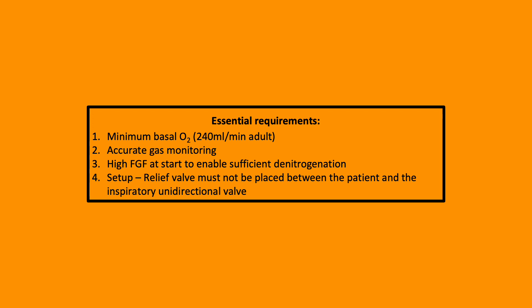You must at least match the basal oxygen requirement for the patient, which is classically 240 mls per minute in an adult. You must have accurate gas monitoring. At the start of the use of the Circle System, you should consider using high fresh gas flow to enable sufficient denitrogenation of the circuit, thus preventing delivery of a hypoxic gas mixture.